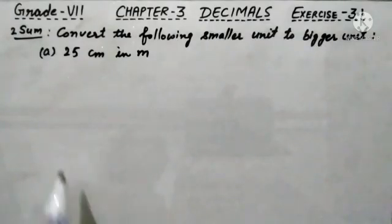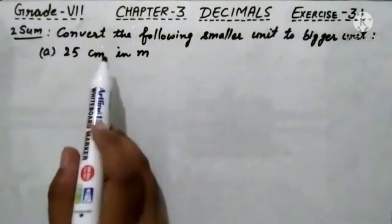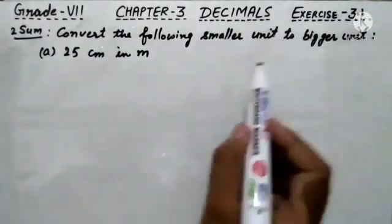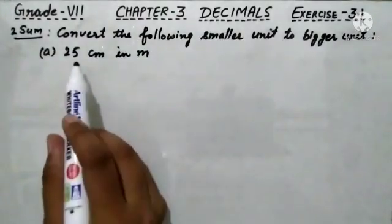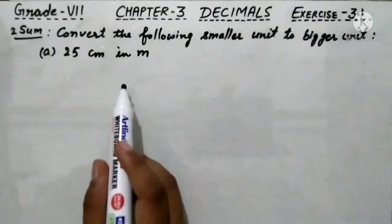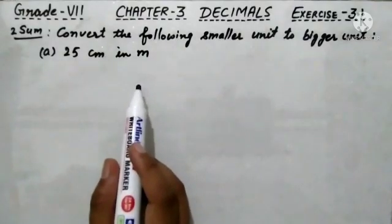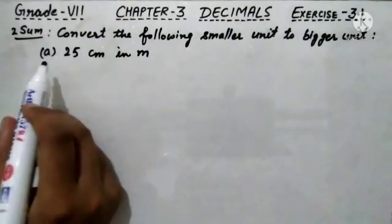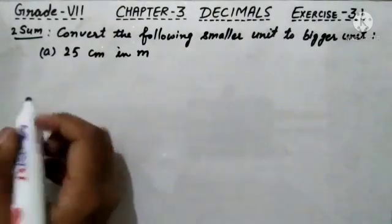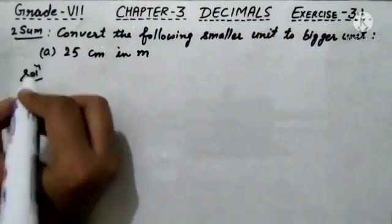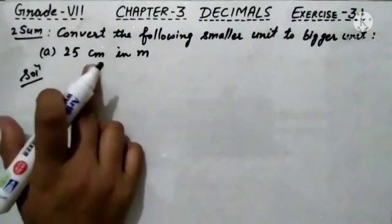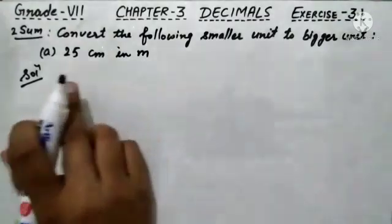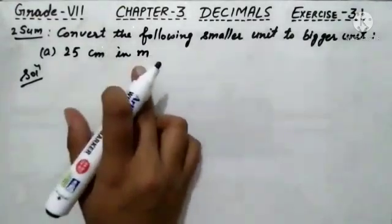Now we are going to start second sum. The second sum is quite similar to the first sum. The statement is: convert the following smaller unit to bigger unit. In the second sum, four subparts are given. Out of four subparts, I am going to solve the first part for you, and the remaining you will solve yourself. The smallest unit here is centimeter, which we have to convert into meter.